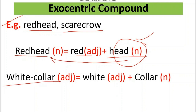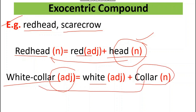Similarly, 'white collar' — white collar is an adjective. 'White' is an adjective and 'collar' is a noun, but 'collar' is not the head of white collar. And for 'scarecrow' — the overall word scarecrow is a noun. It is made of 'scare' and 'crow', but a scarecrow is not a type of crow. So here we have an exocentric compound because the head is outside the compound.